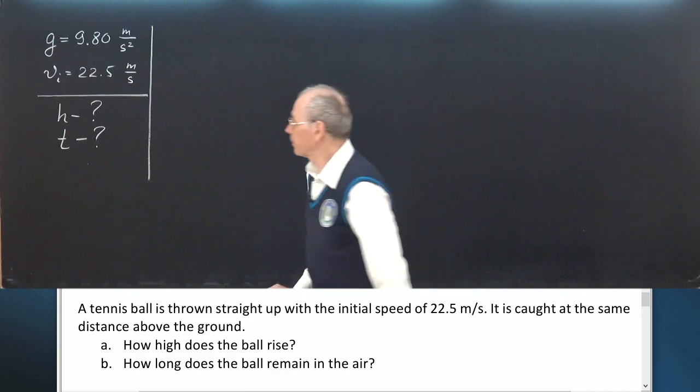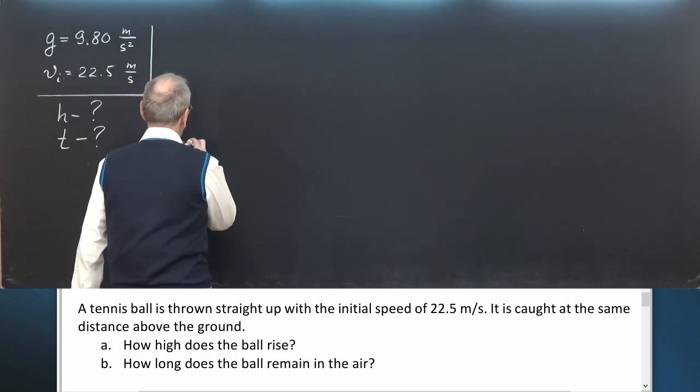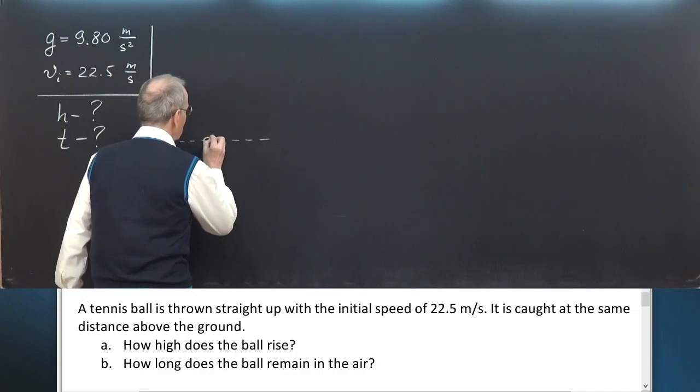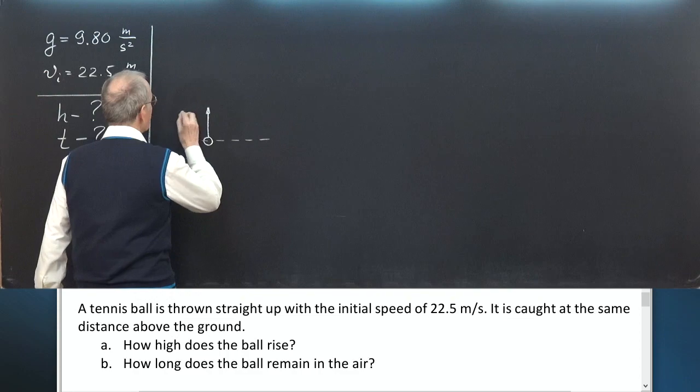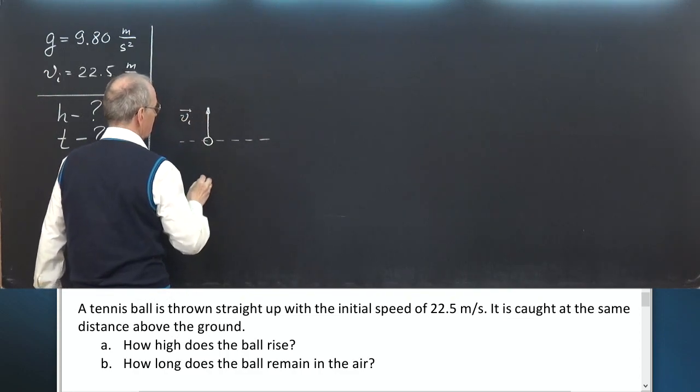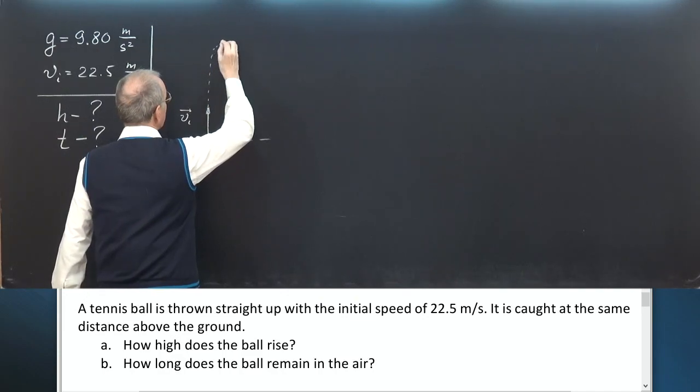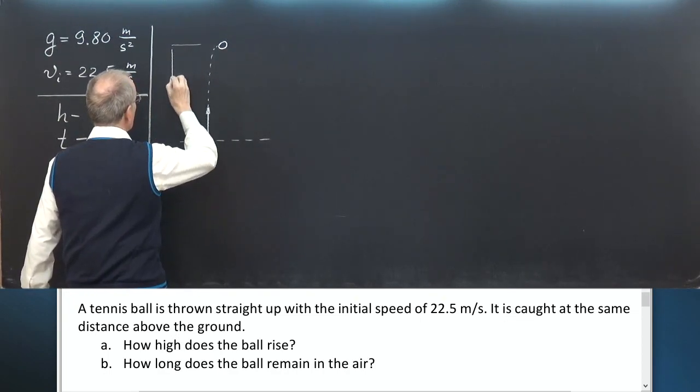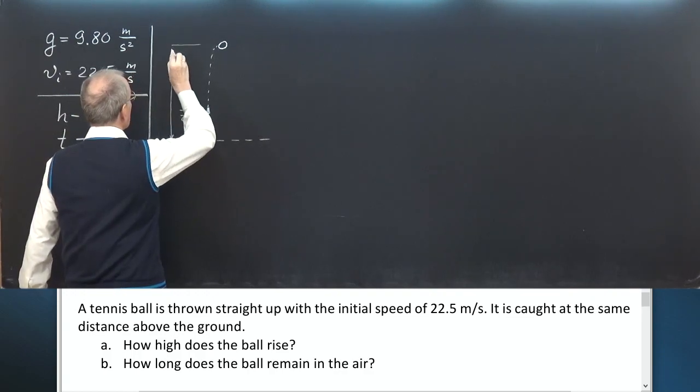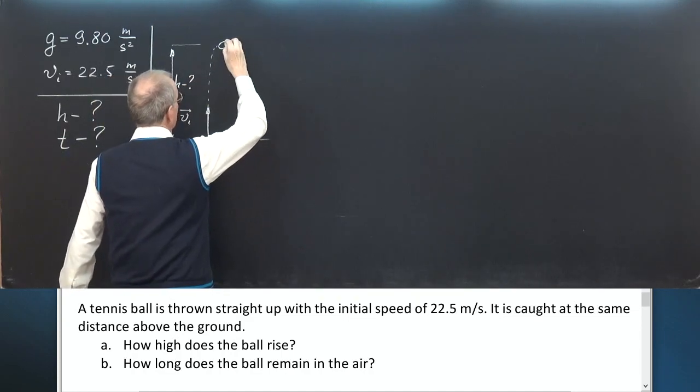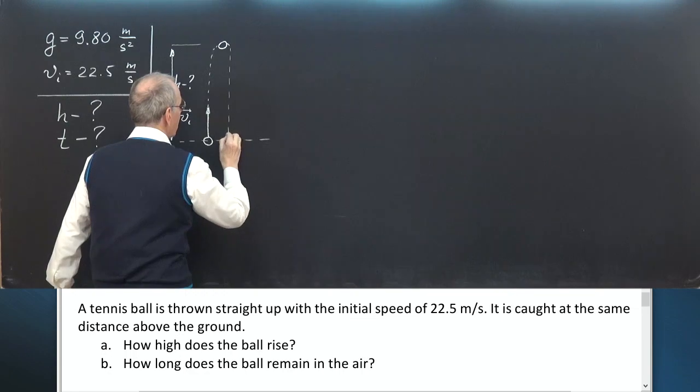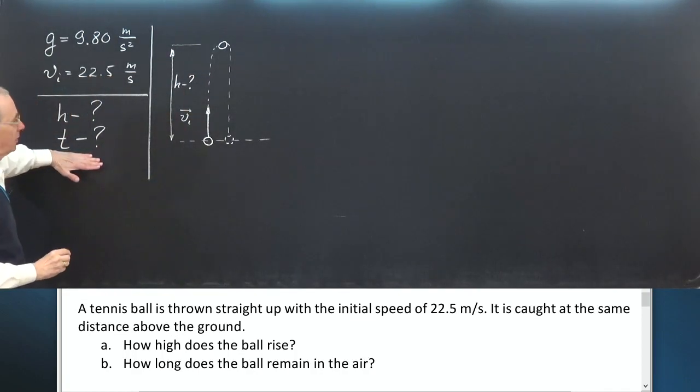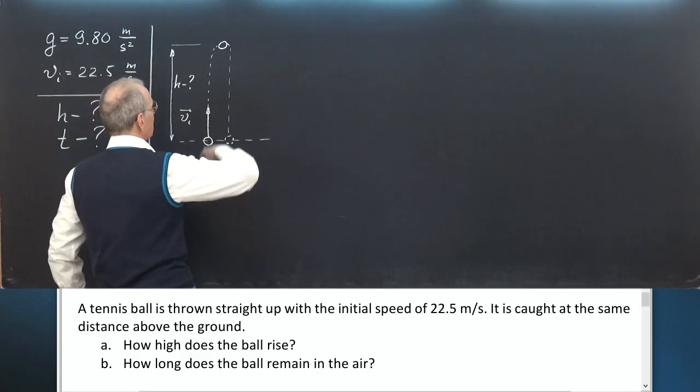Let's make a picture. This is initial and final position of the ball. The ball is thrown at a speed V initial directed vertically. It rises, reaches the height H above the ground, and then returns to the same height.